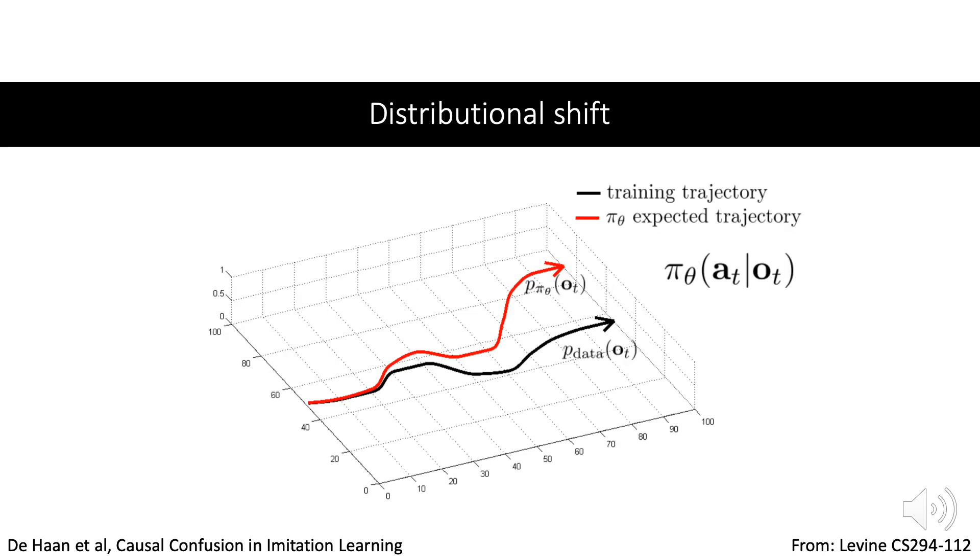Behavioral cloning reduces imitation learning to supervised learning, but the states in the expert's demonstrations are different from the states we encounter when we run our imperfect imitator, thus we have a distributional shift.